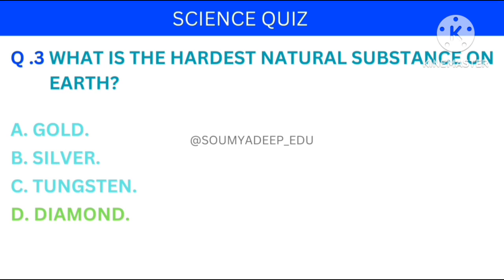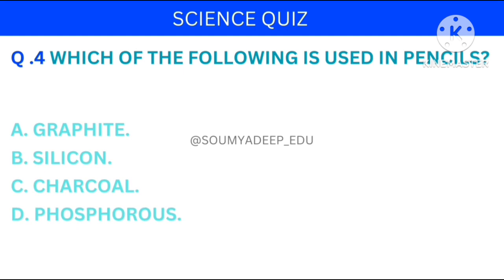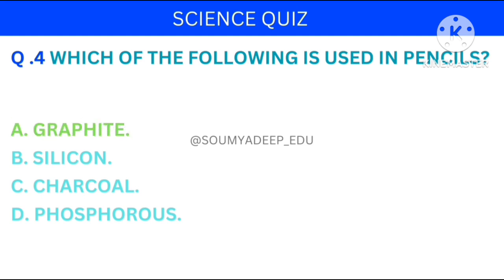Which of the following is used in pencils? The options are: graphite, silicon, charcoal, phosphorus. Your time starts now. The answer is graphite.